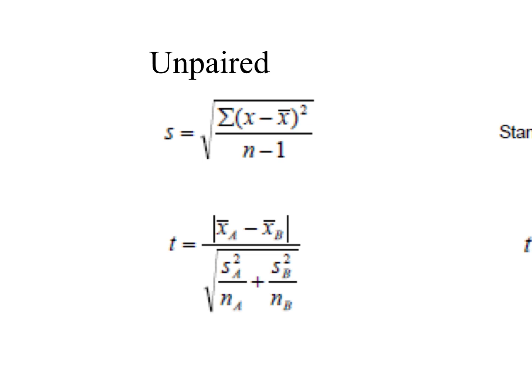The unpaired t-test is used when comparing the means of two sets of data that aren't directly related to one another. For example, one field has fertiliser A applied and you record average growth rate; a second field has fertiliser B applied and you record a second average growth rate. One field has nothing directly to do with the other.